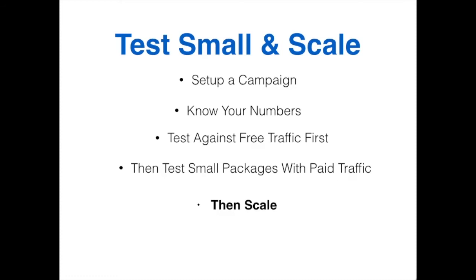Then you can scale — because you know your numbers. You know that for every $100 you spend on clicks, you get $200 back. When that's the case, you can go out there and buy as much paid traffic as you want. You know for every dollar you're spending, you're getting a dollar back — maybe not upfront, but in the long run as your prospect goes through your offers or cross promotions. This formula keeps you protected so you don't blow money on things you don't know how they'll perform. You can't lose with this formula.